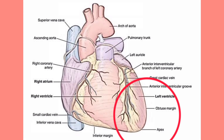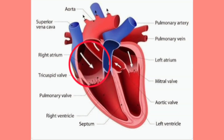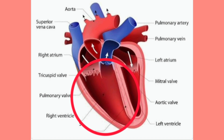The right atrium has a smooth, thin-walled posterior part called the sinus venarum, where the superior and inferior vena cava and the coronary sinus open. It is separated internally by the crista terminalis and externally by the sulcus terminalis, and contains the tricuspid orifice leading to the right ventricle. The right ventricle receives blood through the tricuspid valve, contains muscular elevations, has an infundibulum leading to the pulmonary valve and trunk, and is separated from the left ventricle by the interventricular septum.